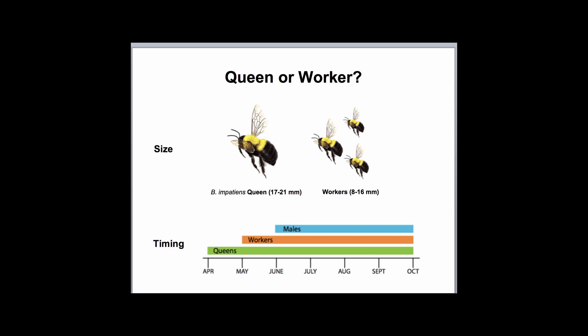In size, the queens are distinctly larger than the workers. For our most common species in Ohio, Bombus impatiens, the queen is 17 to 21 millimeters in length, or about half to two-thirds of the size of your thumb. The workers are variable in size within the species and even within a given nest — you might find workers that are 8 millimeters long or all the way up to 16 millimeters long. Just keep in mind, worker size can be variable, but they will always be smaller than a queen.